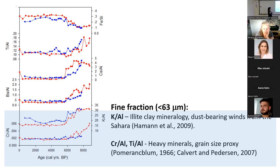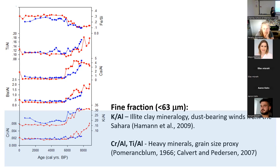We did geochemical analysis on both the fine fraction and coarse fraction. The coarse fraction includes the bulk and coarse sand. The fine fraction mostly represents material coming from the Nile — fine-grained material floating with the river. We see ratios showing illite clay mineralogy characteristic of Saharan wind transport, so these elements represent both the dust fraction and heavy minerals coming with the coarse sand.